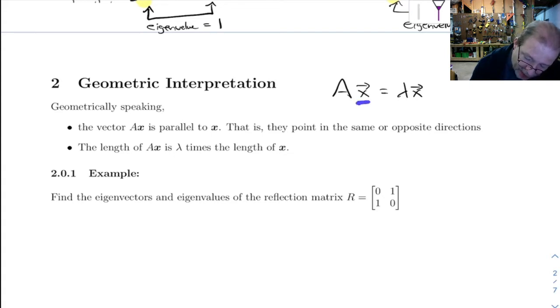In other words, if you multiply the eigenvector times the matrix, it really just multiplies it by a scalar. So what that's going to do is it's going to maybe stretch or compress it, and it might reverse its direction.